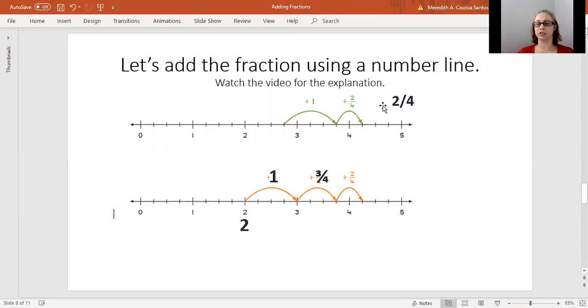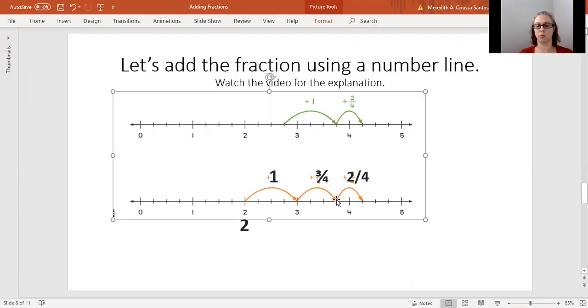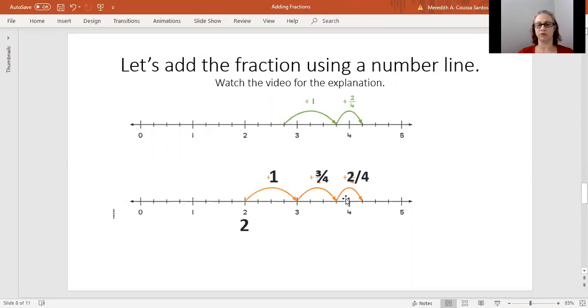But we still have to add the two-fourths. We did not add that in yet. So let's bring the two-fourths down plus two-fourths. So from where we left off, one-fourth, two-fourths, which brings us to four and one-fourth or four and a quarter.